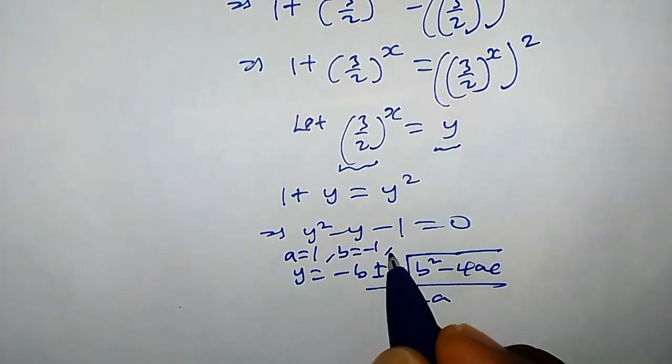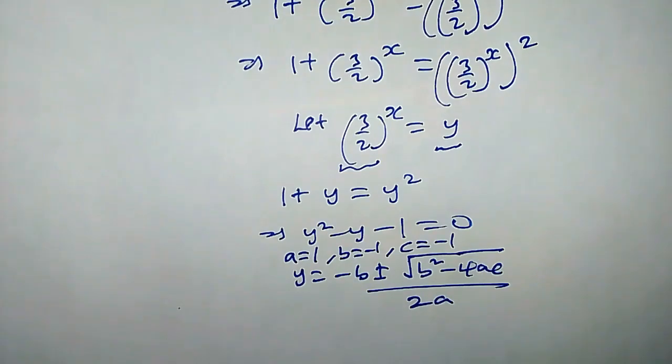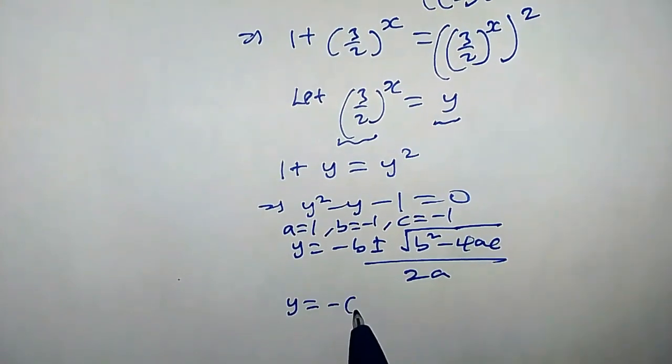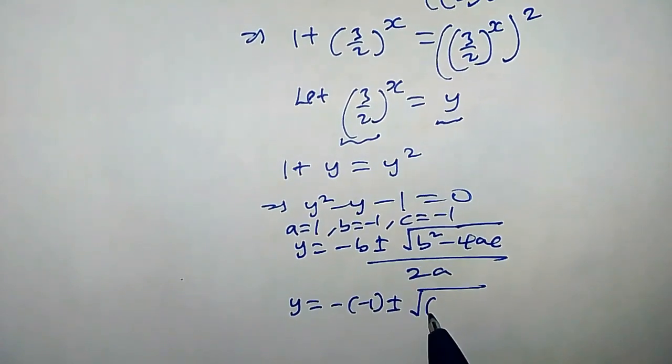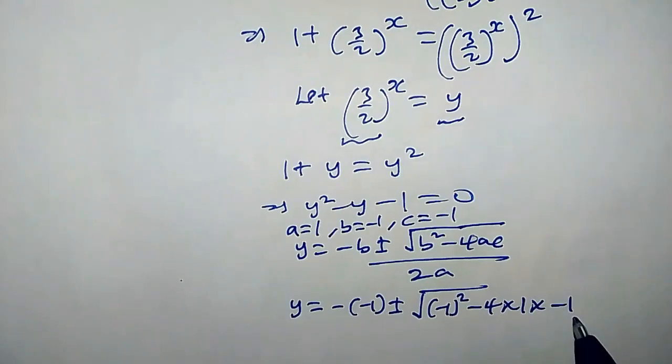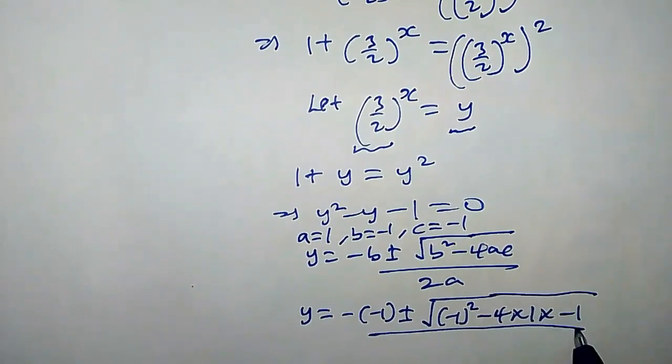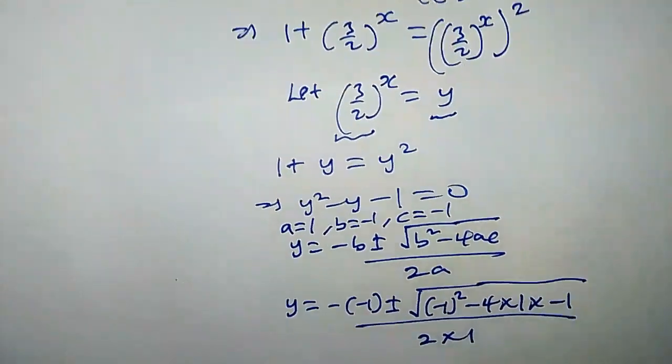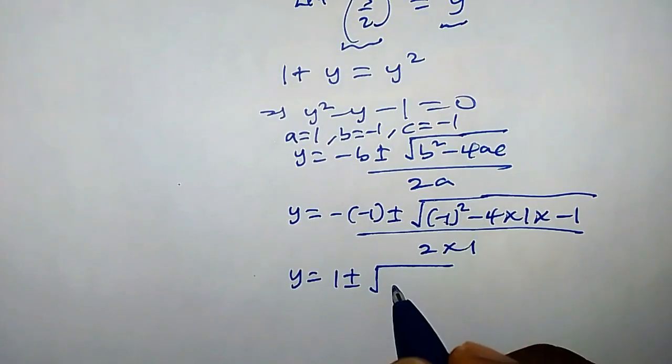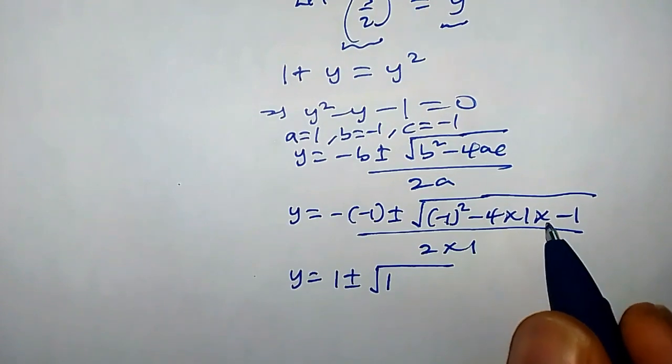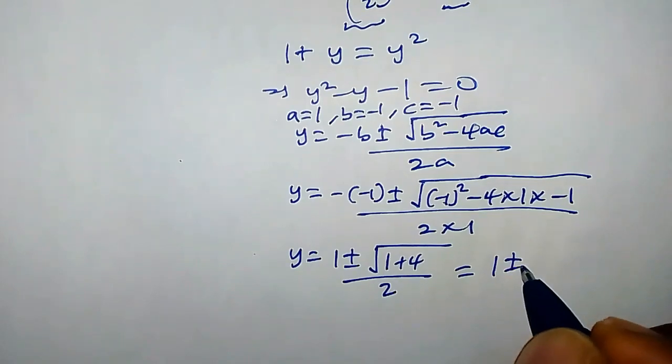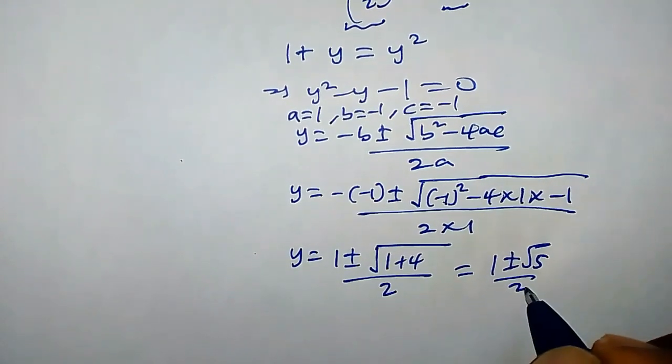When we plug in all these values, we're going to obtain y equals minus times negative 1 plus or minus square root of negative 1 all squared minus 4 times 1 times negative 1, all over 2 times 1. y equals 1 plus or minus square root of 5 over 2.